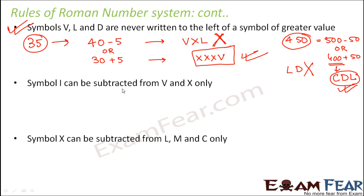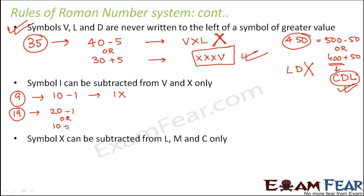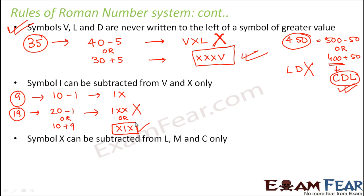The next rule says symbol I can be subtracted from V and X only. For example, how do we write 9? 9 is 10 minus 1, so we write it as IX. Now suppose you have to write 19. 19 can be 20 minus 1 or 10 plus 9. If you write it as 20 minus 1, I would be subtracted from XX, which is not allowed — I can only be subtracted from X or V, not from a repeated symbol. Therefore 10 plus 9, written as XIX, is the right way of writing 19.